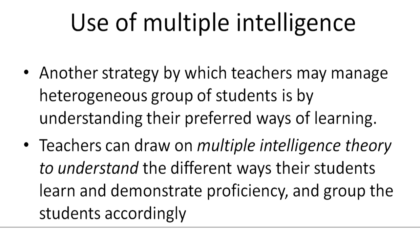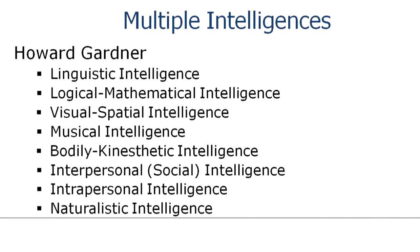The teacher can manage heterogeneous groups or a multi-level classroom by understanding students' preferred ways of learning. The teacher can draw on the multiple intelligence theory to understand the different ways students learn and demonstrate proficiency, and group students accordingly. Howard Gardner gave this theory of multiple intelligence, stating that students, children, and adults learn in different ways and have different kinds of intelligences.